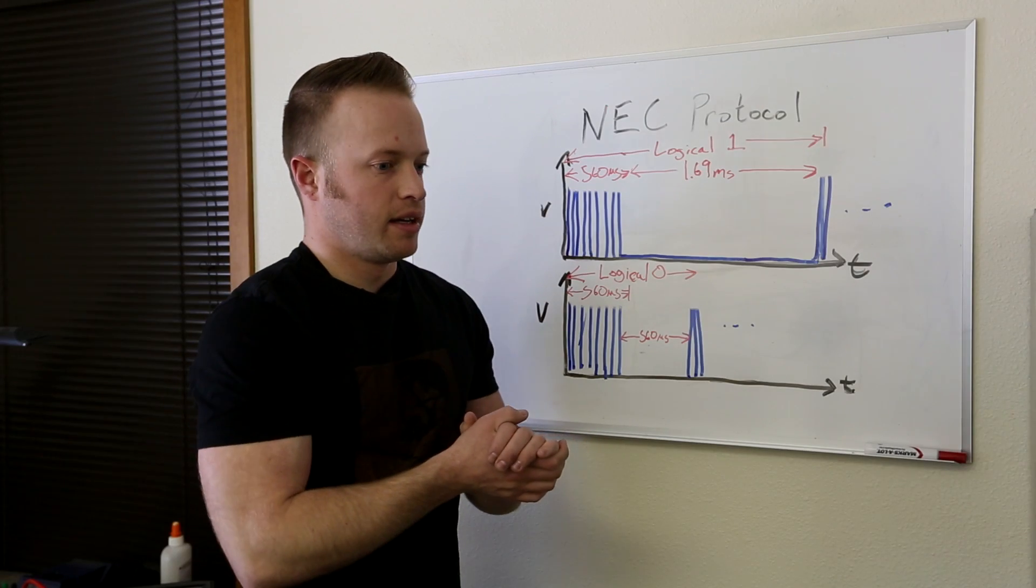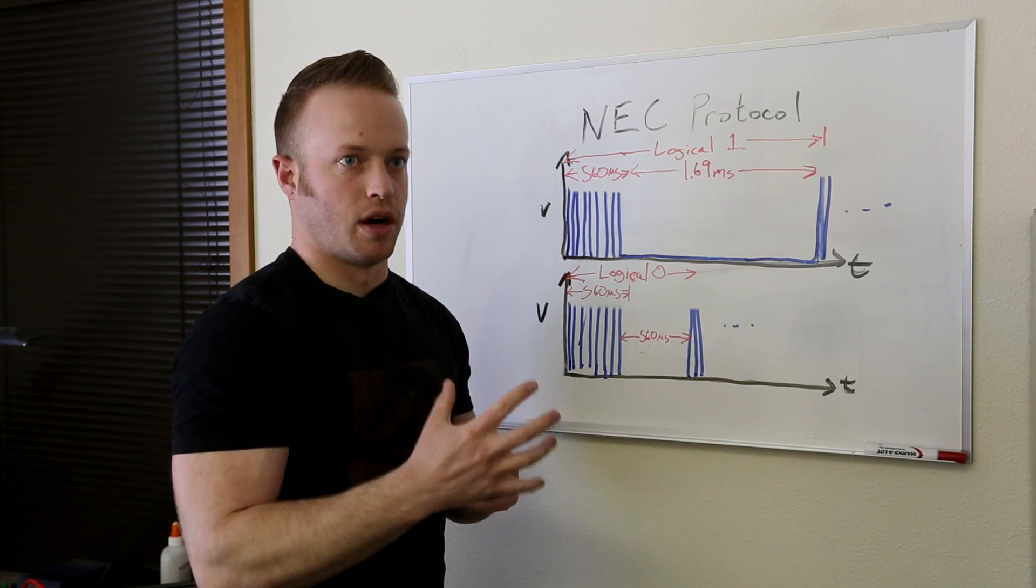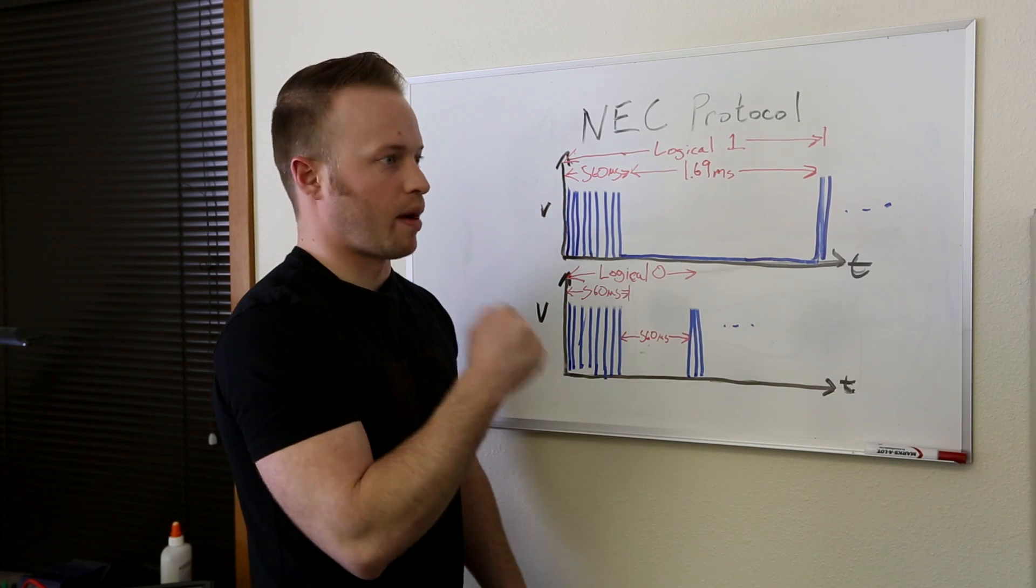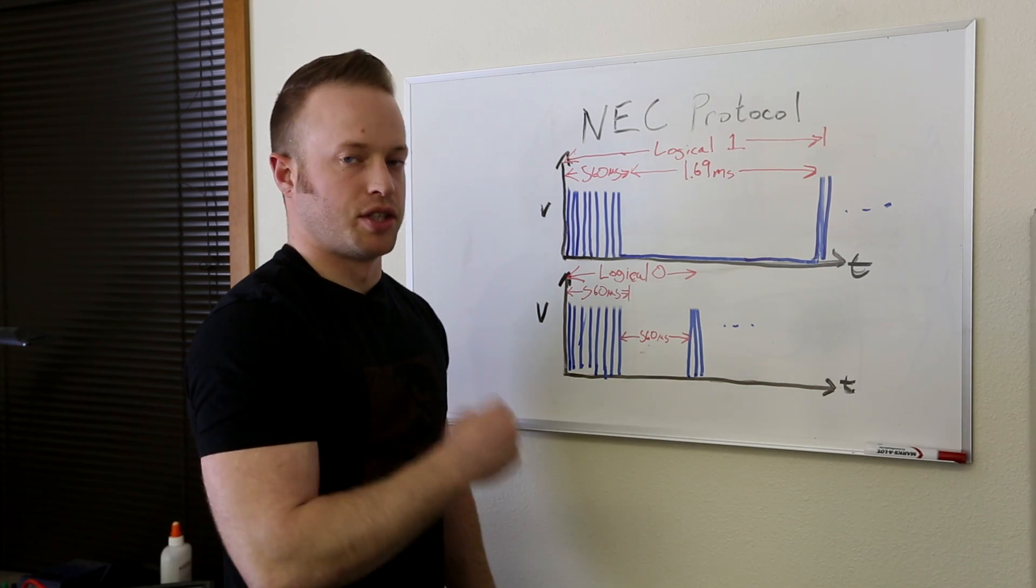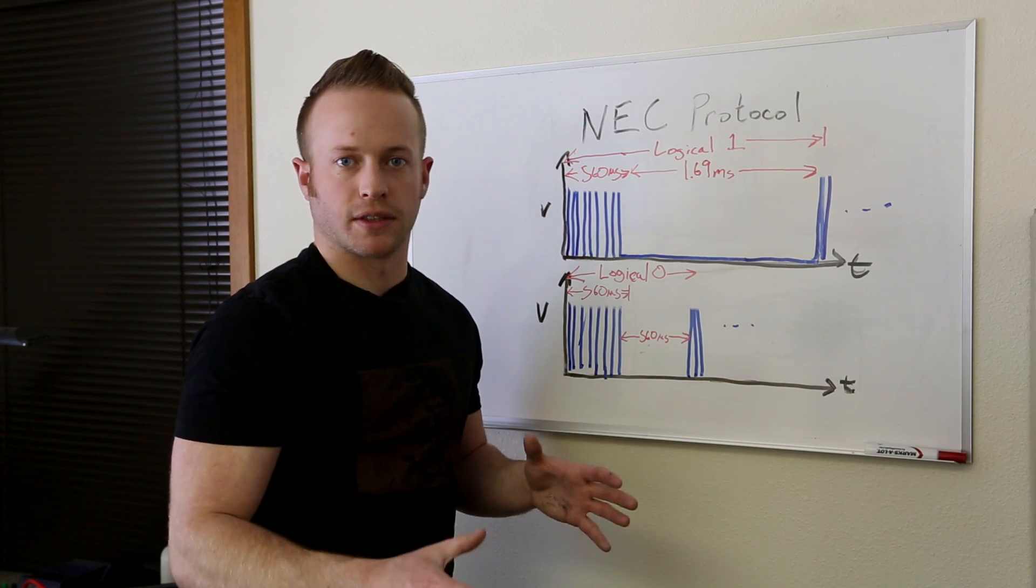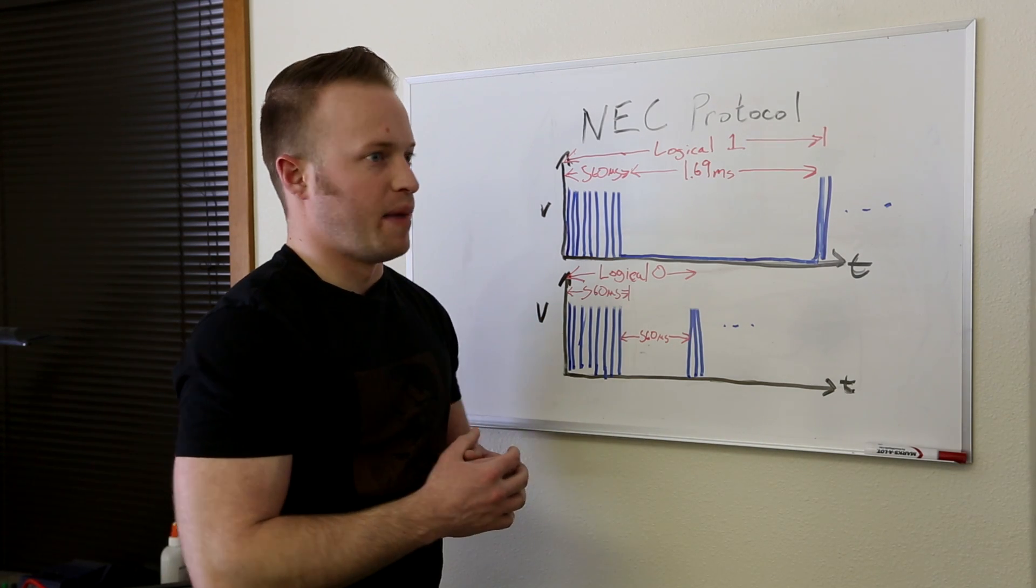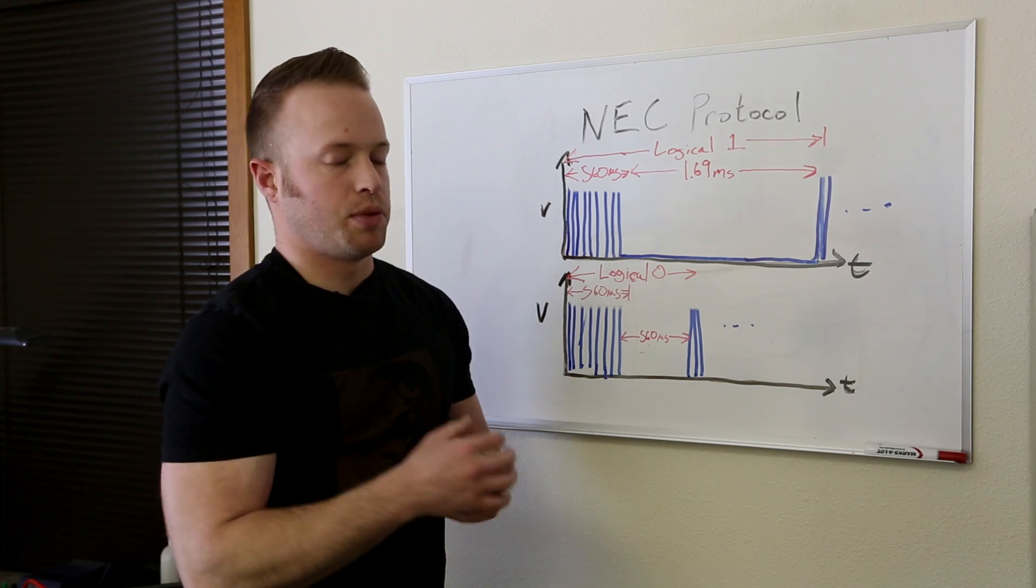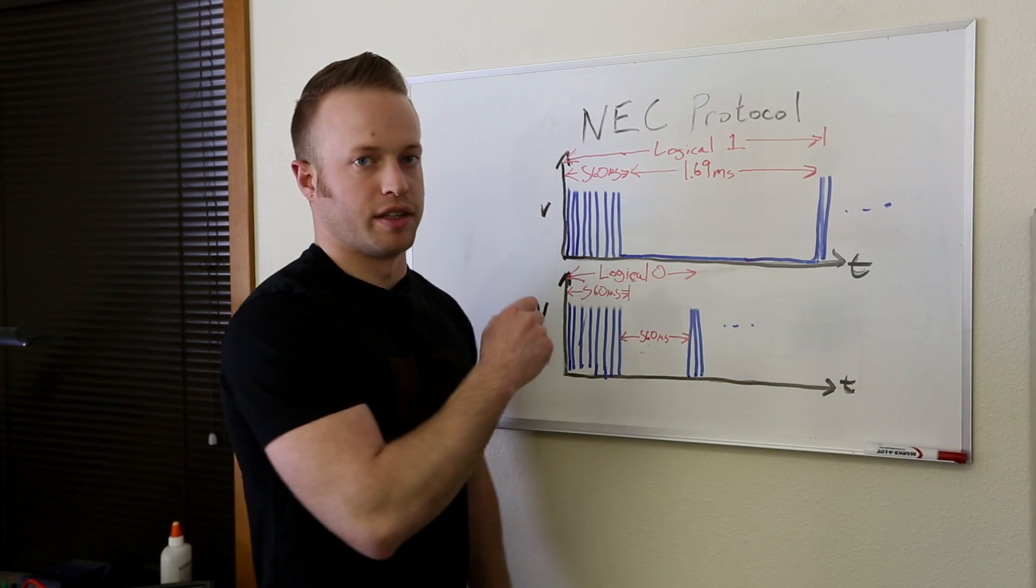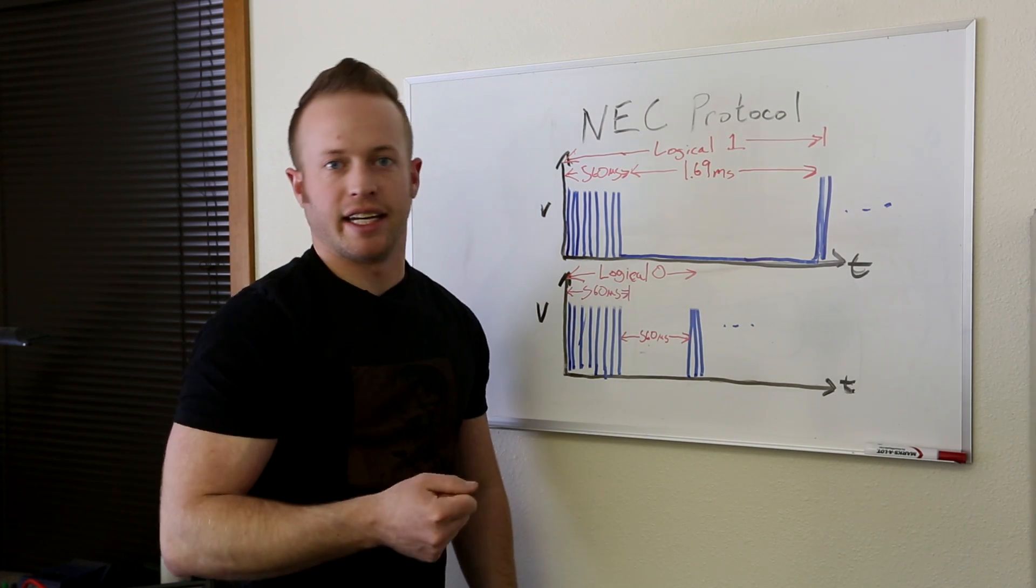When the controller takes in that data, the highs and lows, it doesn't take one as a high and zero as a low. The data is represented by the amount of time the signal stays high or low. And this is different for all of the IR protocols, of which there are about a dozen major ones. And each protocol has a different amount of time that the signal is supposed to stay high or low.